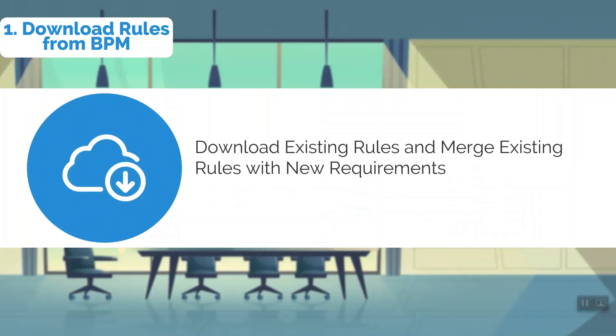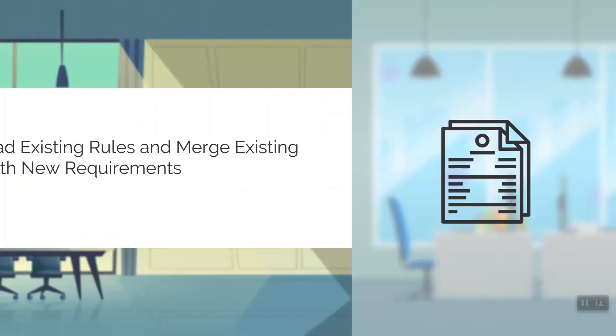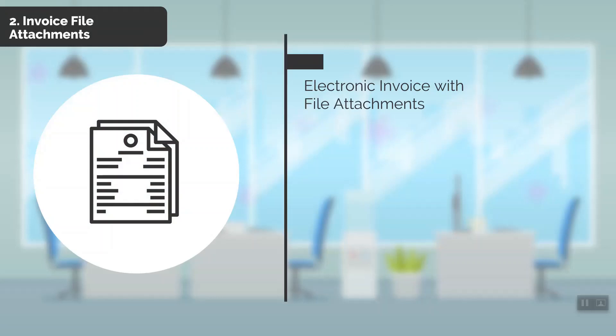Electronic invoices with file attachments. Supporting documentation can now be implemented with electronic invoices. In order to utilize this feature, the sender must convert the file into a text sequence using base64 encoding and include it with the invoice. When the invoice is imported, the documents are decoded and saved along with the invoice, which is a huge time saving.